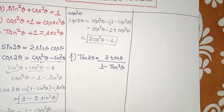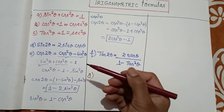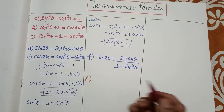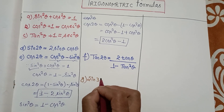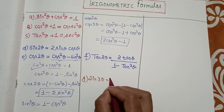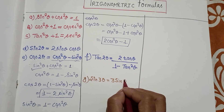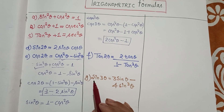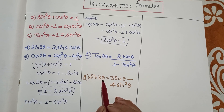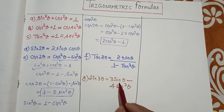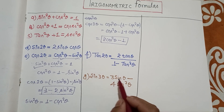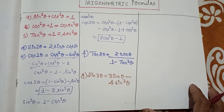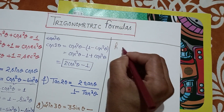Now we move from sin 2θ to sin 3θ. The formula for sin 3θ is: sin 3θ = 3 sin θ − 4 sin³θ. So when we see sin 3θ, the formula is 3 sin θ minus 4 sin³θ.